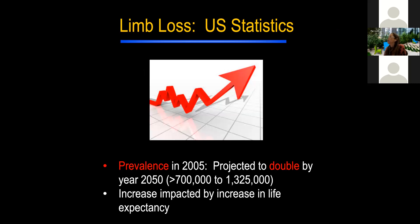The importance of limb loss, whether due to vascular or traumatic causes, is that its prevalence is anticipated to double by the year 2050, which is huge. If you have about 700,000 people with limb loss or amputations now, it's going to be approximately 1.3 million people by 2050. Remember how much it costs now for somebody who has had an amputation — imagine those costs in the future.